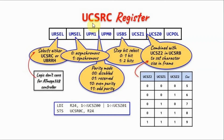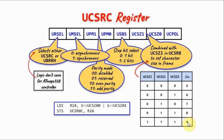Control and status register C determines other USART specifications such as synchronous or asynchronous communication. Two bits set the parity mode: 00 means no parity, 10 means even parity, 11 means odd parity. One bit sets the number of stop bits. Two bits combined with a bit in register B determine the character size — options are 5, 6, 7, 8, or 9 bits. In this video we focus on 8-bit character size.